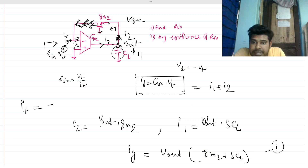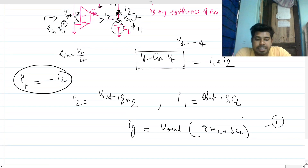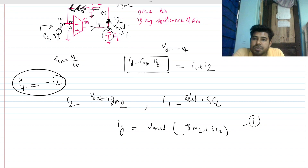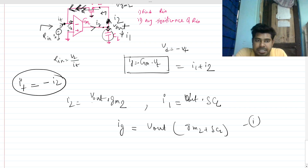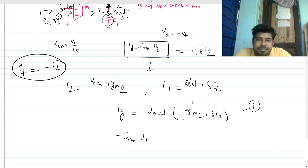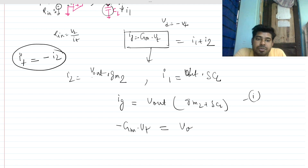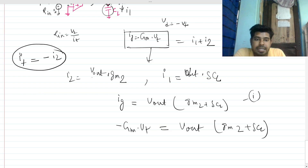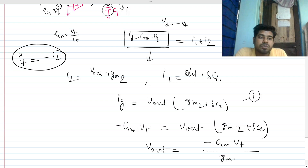Let me write it here. We can replace i2 and we have to find V_out in terms of V_test as well. We have to replace V_out in terms of V_test. Now I_g is minus gm times V_t from that equation, which equals V_out times (gm2 + sCL). So V_out equals minus gm * V_t over (gm2 + sCL).